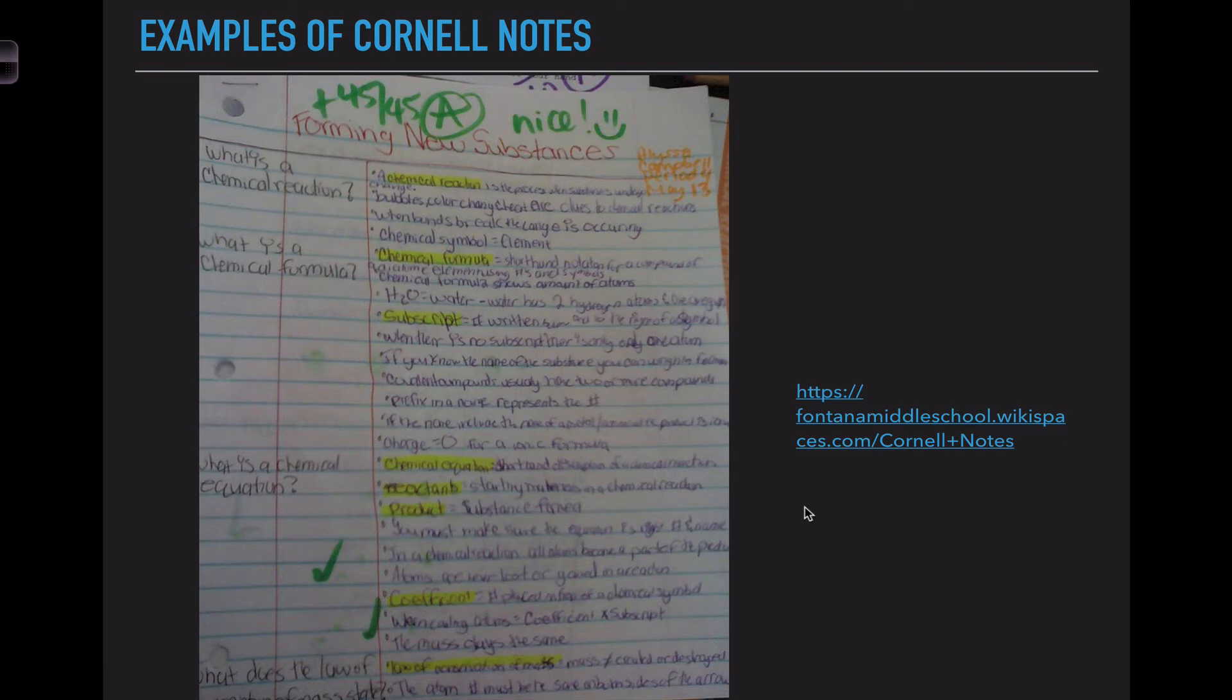Here's our last example of Cornell notes. This is a chemistry example about forming new substances. In the right hand section she is writing down definitions and highlighting her key terms. She's summarizing things and there don't seem to be tons of complete sentences but she does have a lot of bullet points, which is what I encourage you to do in your notes. Down the left she has her questions: what is a chemical reaction, what is a chemical formula, what is a chemical equation. These are ideas that could be questions on a test or things she may ask herself when she studies for this section.